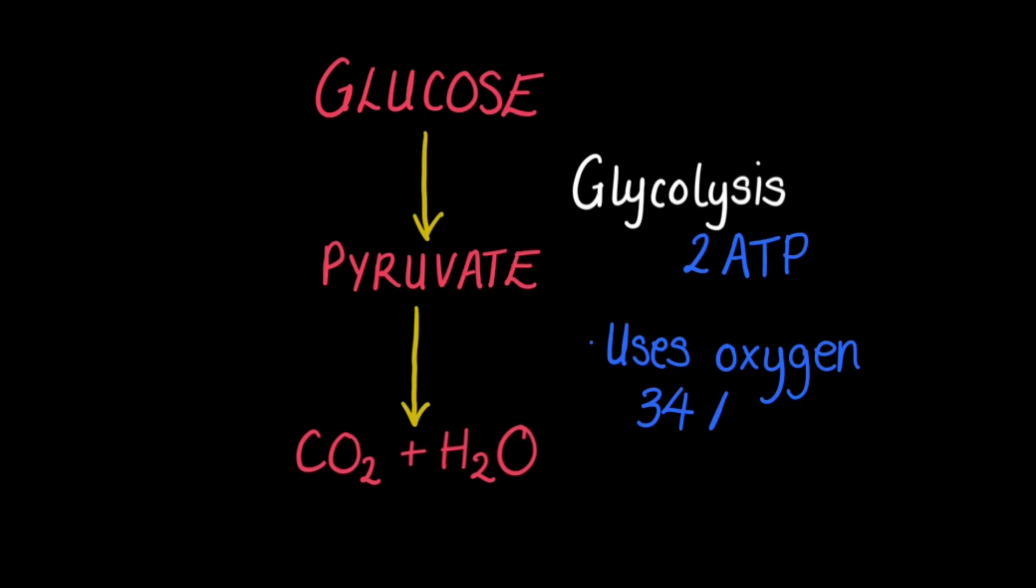This second stage produces 34 ATP, a much larger yield of ATP than glycolysis. Therefore, in total during aerobic respiration 36 ATP are produced.